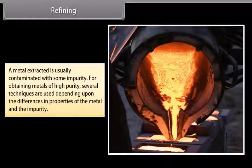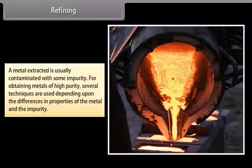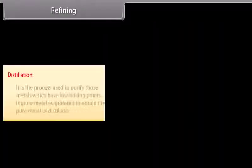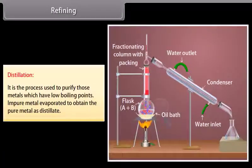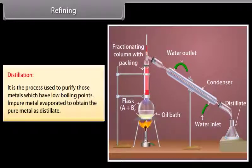Refining. A metal extracted is usually contaminated with some impurity. For obtaining metals of high purity, several techniques are used depending upon the differences in properties of the metal and the impurity. Distillation. It is the process used to purify those metals which have low boiling points. Impure metal is evaporated to obtain the pure metal as distillate. For example, zinc and mercury.